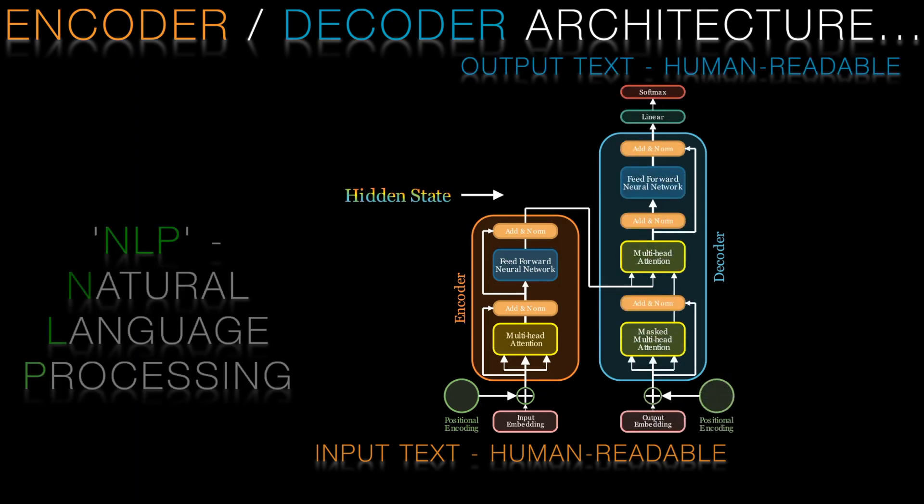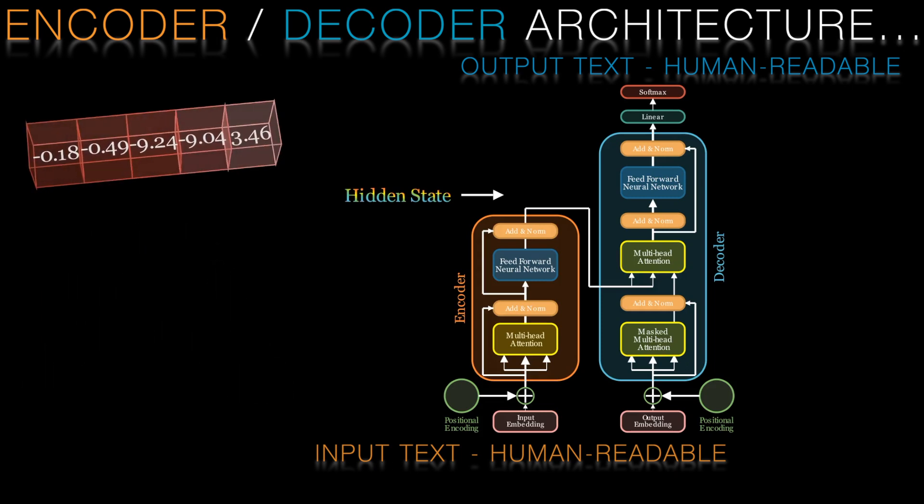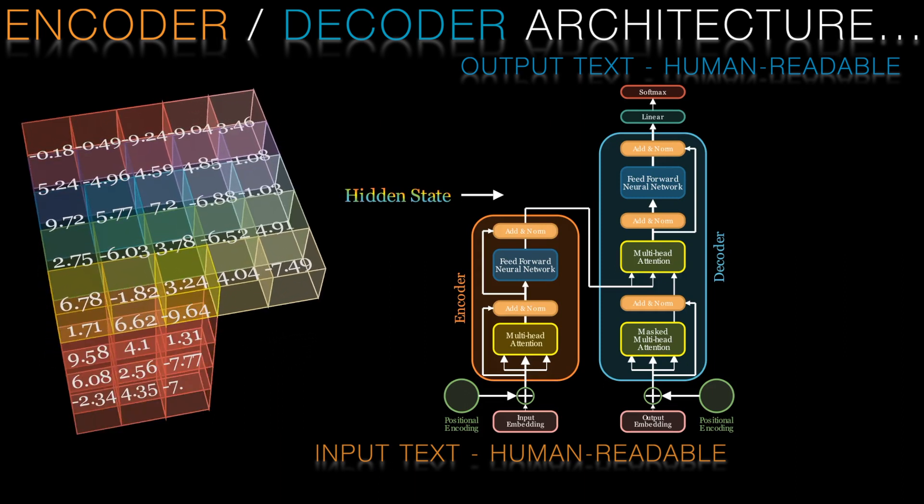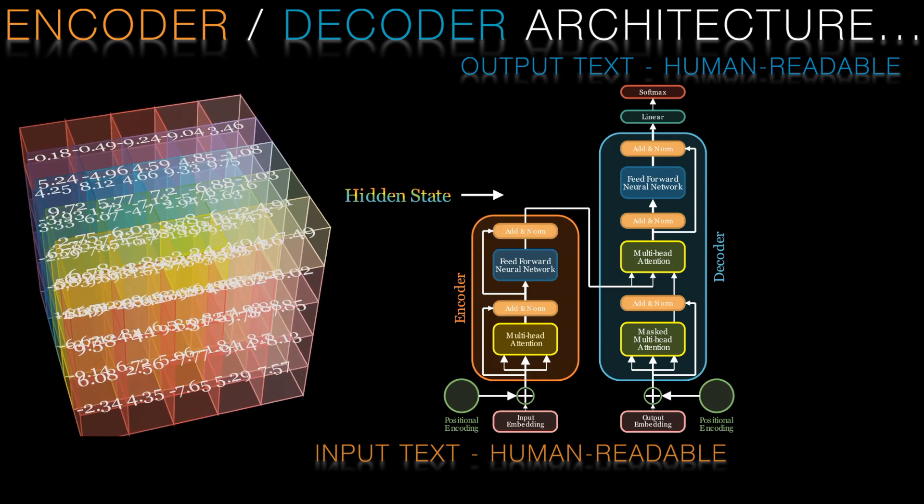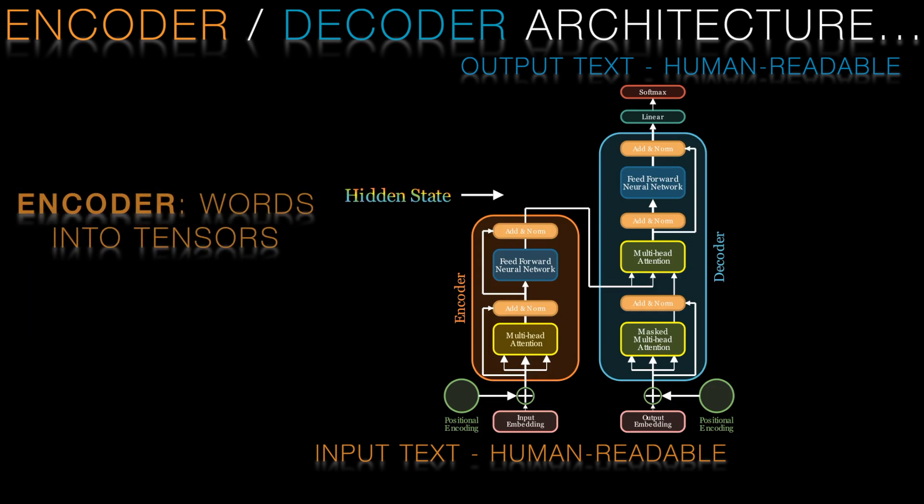For NLP tasks such as ChatGPT, the inputs to the encoder are words. As discussed in prior videos, machine learning models don't process words—they only understand scalars, vectors, matrices and tensors. So one way to think of the encoder is translating human readable words sequence into the hidden state tensor representation which is understood and interpretable by the AI model.